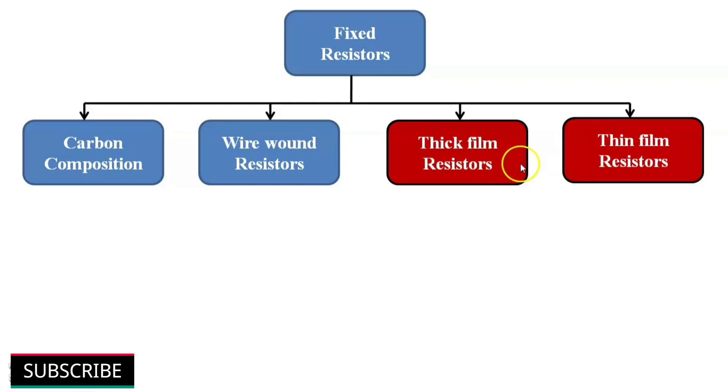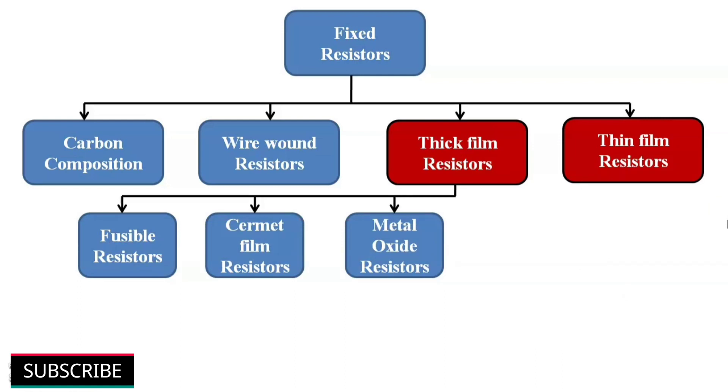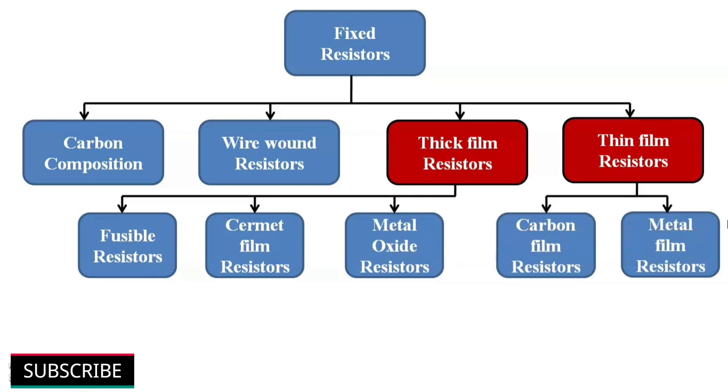Next type of resistors are film type resistors. The film resistors have a resistive layer on a ceramic base whose thickness defines the type they belong to. The thickness of resistive layer on thick film resistors are much higher than thin film resistors. There are three main types of thick film resistors and two types of thin film resistors. Let's discuss them one by one.